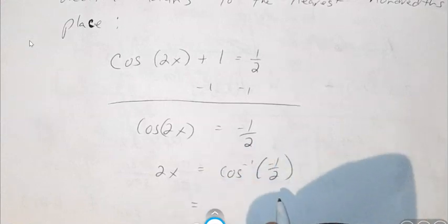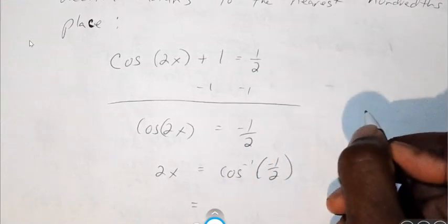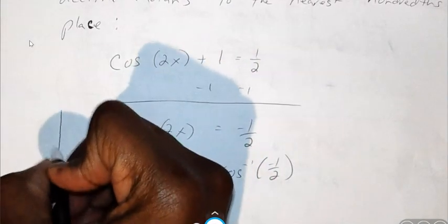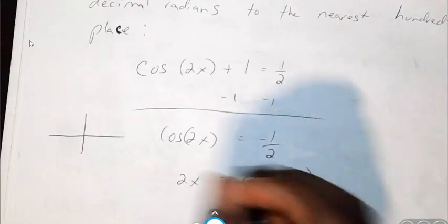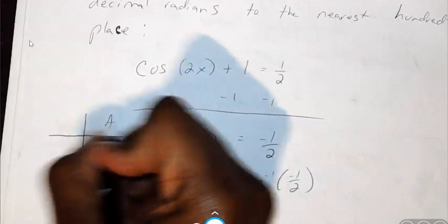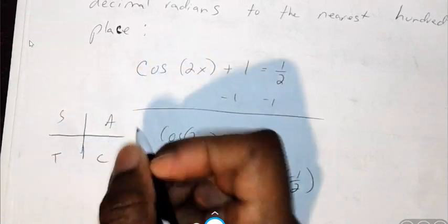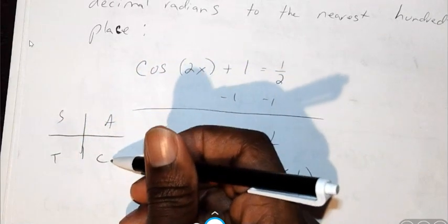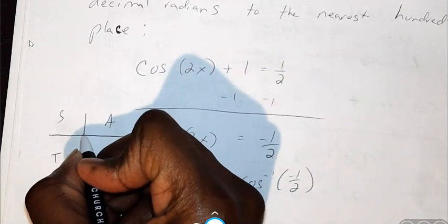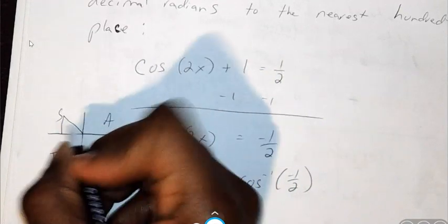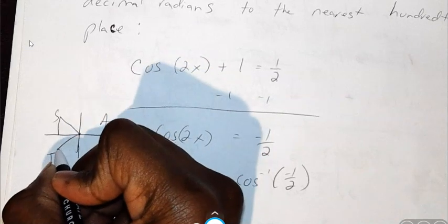And cosine inverse of negative 1 half, if you think about that on a unit circle, cosine is negative 1 half in two places. Remember all students take calculus. Cosine is positive here and positive there. So cosine is negative in this direction and in this quadrant.